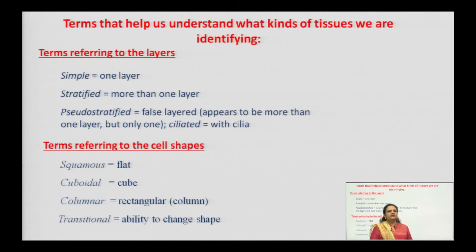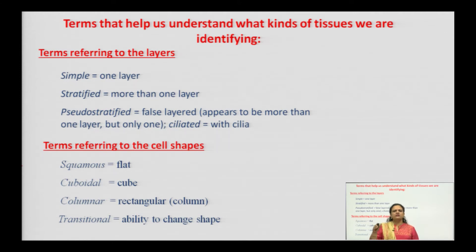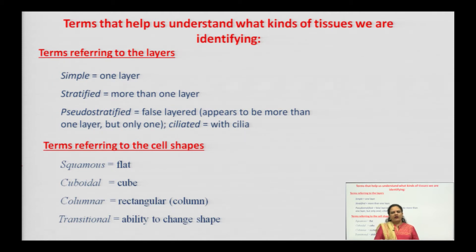Now, coming to terms that help us understand what kind of tissues we are studying. Tissues are classified via terms referring to the layers of their arrangement — how different cells combine to make a single tissue. The first is simple tissue, meaning single-layer tissue. The second is stratified tissue, meaning more than one layer arranged one over another.